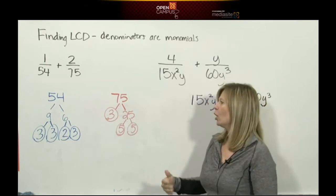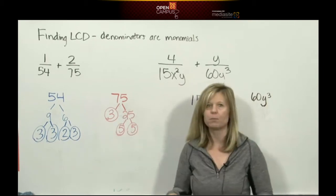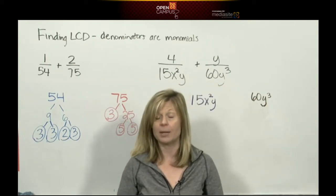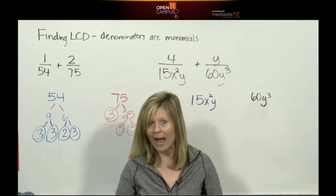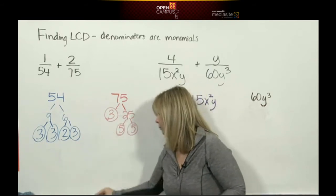Now here's the problem: people think once you do the factor trees, if you just take all these prime numbers and multiply them, you get the least common denominator. That is incorrect because you don't want to repeat factors.